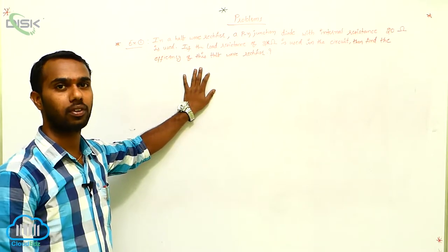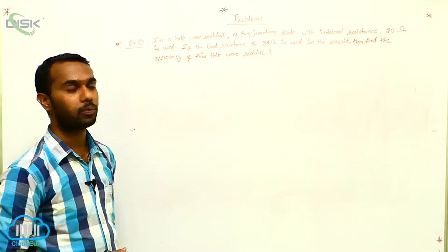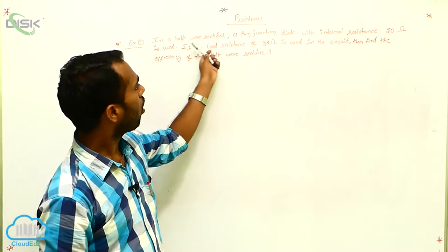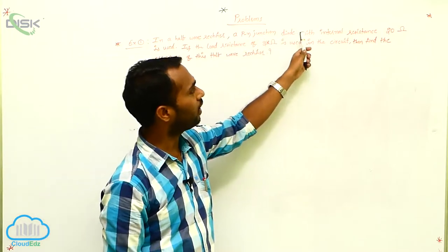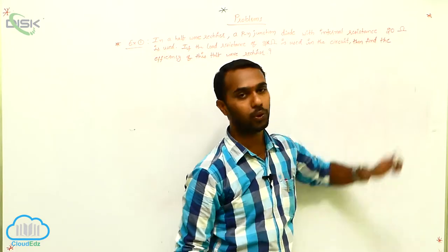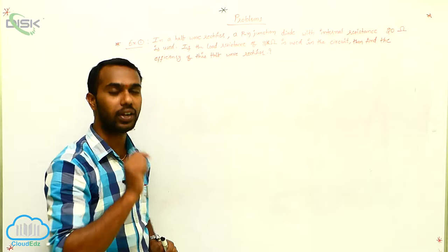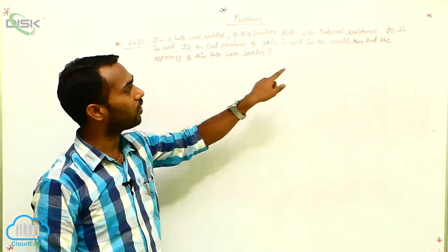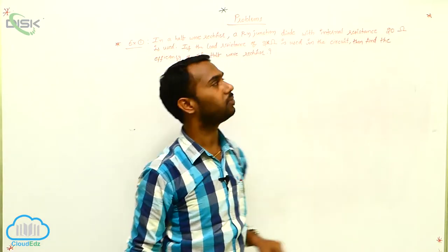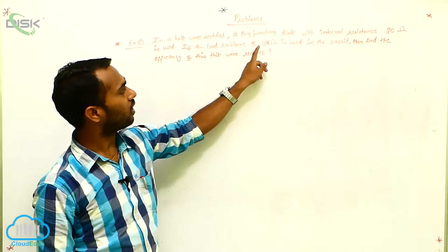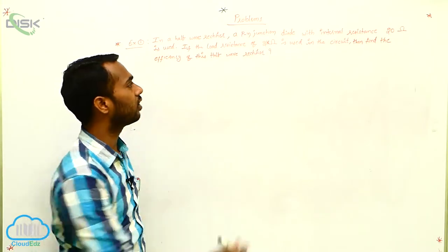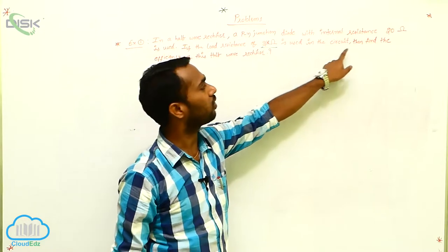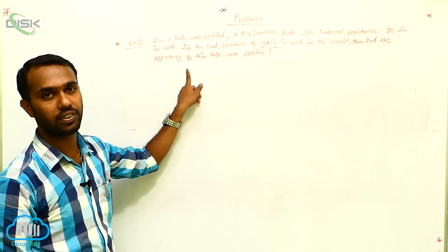Let's solve a numerical problem. In a half wave rectifier, a PN junction diode with internal resistance of 20 ohms is given. Only a single diode is used. The load resistance is 2 kilo ohms — note that it is 2 kilo ohms, not 2 ohms. Find the efficiency of the half wave rectifier.